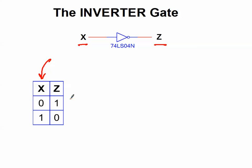So if X is 0, Z is 1. If X is 1, Z is 0. And that's all an inverter gate does.